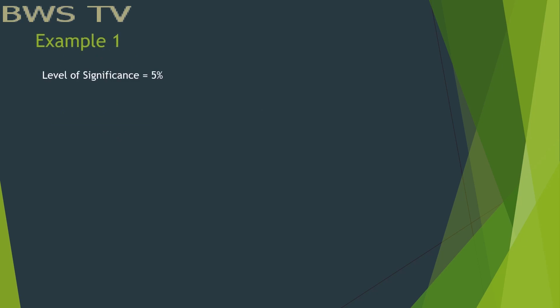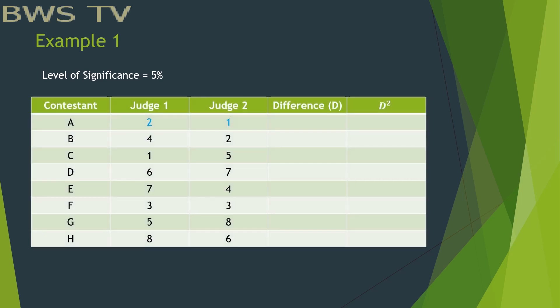Example 1. Since the rank is already given, we don't have to rank them. Our first step here is to subtract the pairs. For example, judge 1A is 2, while judge 2A is 1. Then we subtract 2 minus 1, we get 1, and then continue with the rest.